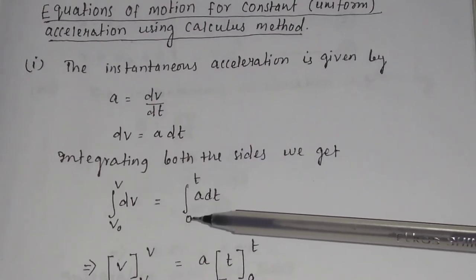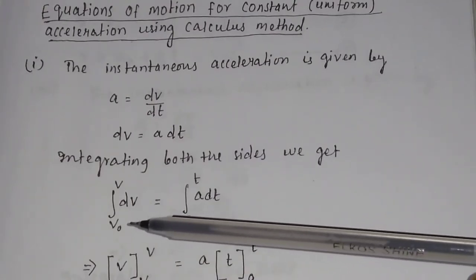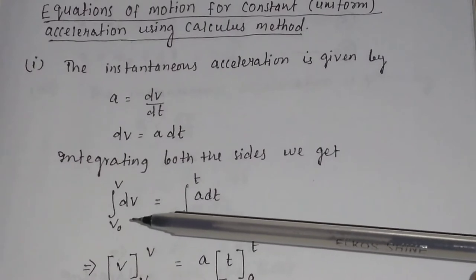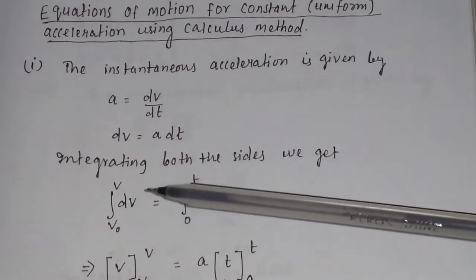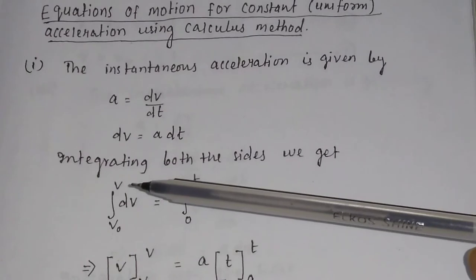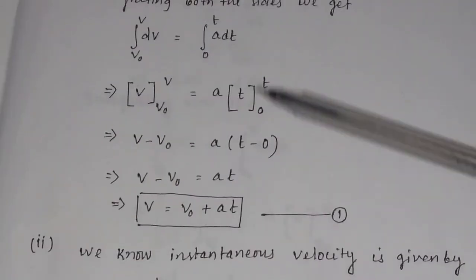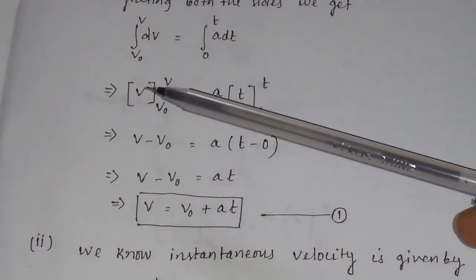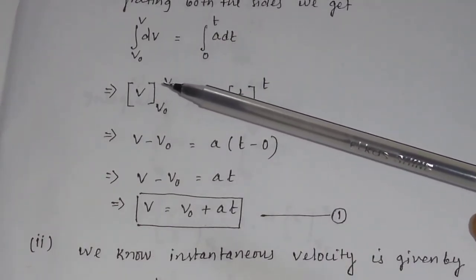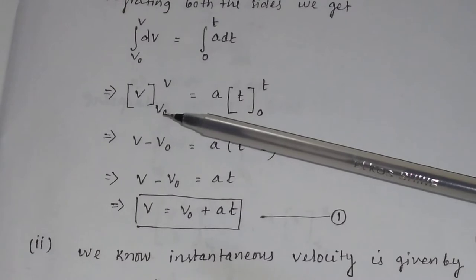When time t equal to 0, velocity is equal to the initial velocity, that is V₀. And when time t equal to t, the velocity is equal to V, that is the final velocity. Integration of dV is equal to V — this is your upper integral and this is your lower integral.